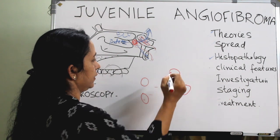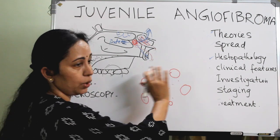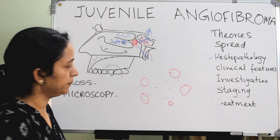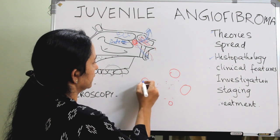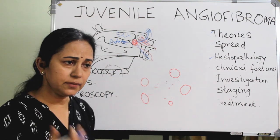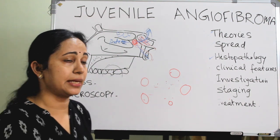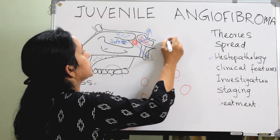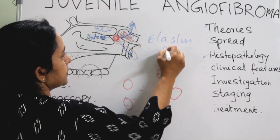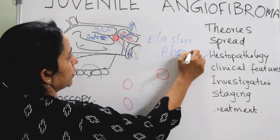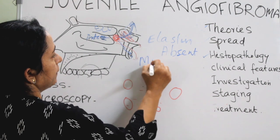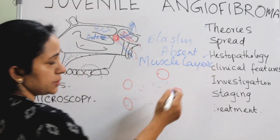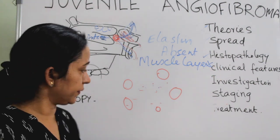The vascular channels are of different sizes. The fibrous stroma appears pink, and the nuclei present as bluish dots. Importantly, the endothelium of these vascular channels lacks elastin fibers — this is a key point to remember. The muscle layer is either absent, pad-like, or circumferential.